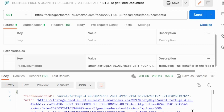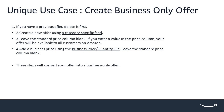Now let us discuss a unique use case on how to create a business-only offer. If you are an Amazon business seller and want to create a business-only offer on your listings, here are the steps: if you have a previous offer, delete it first, then create a new offer using a category-specific feed and leave the standard price blank. If you provide a value in the standard price, your offer will be available to all customers. Add a business price using business price or quantity files and leave the standard price empty. These steps will convert your offer into a business-only offer. XML samples for these scenarios are attached below for reference.